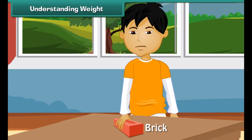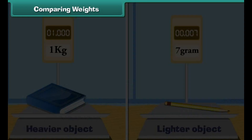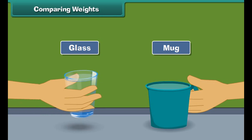Let us understand the concept of weight with the help of an example. Lift a feather — isn't it an easy task? This is because the feather is light. Now try lifting a brick. Do you find the task difficult? This is because the brick is heavy.